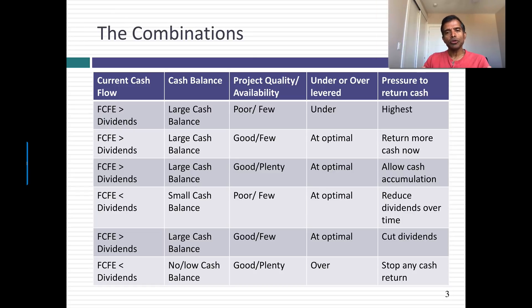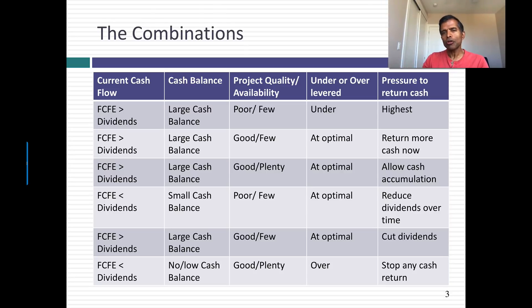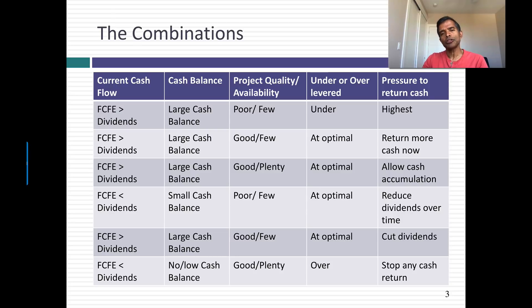Between those two extremes, you have shades of gray — companies which might be holding back cash where we allow the company to accumulate cash because it has good projects and you trust it with your cash, or companies where you give the company the luxury of time, saying you should return cash but don't have to do it right away. On the other side, companies returning too much cash where you might allow it to continue because they're under-levered and want to push the debt ratio up, or you give the company time to adjust slowly.